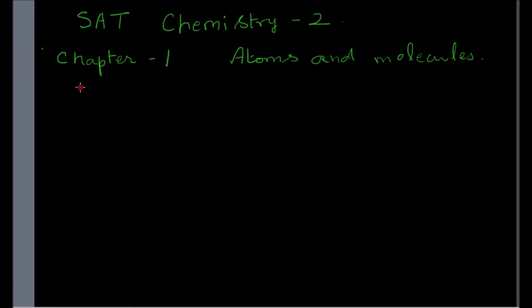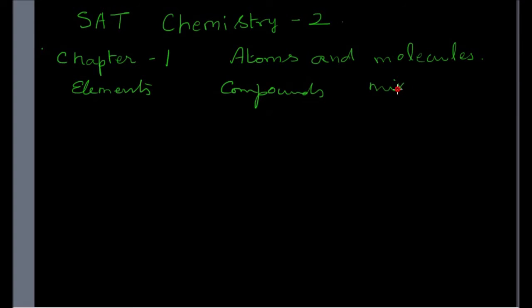Substances in nature can be basically classified into elements, compounds, and mixtures. Elements are the simplest substances in nature. As examples for elements I can give carbon, oxygen, sulfur, aluminum, etc.